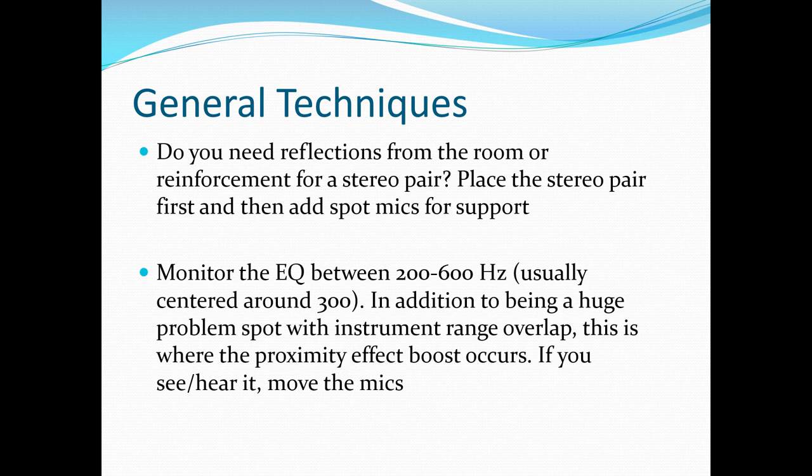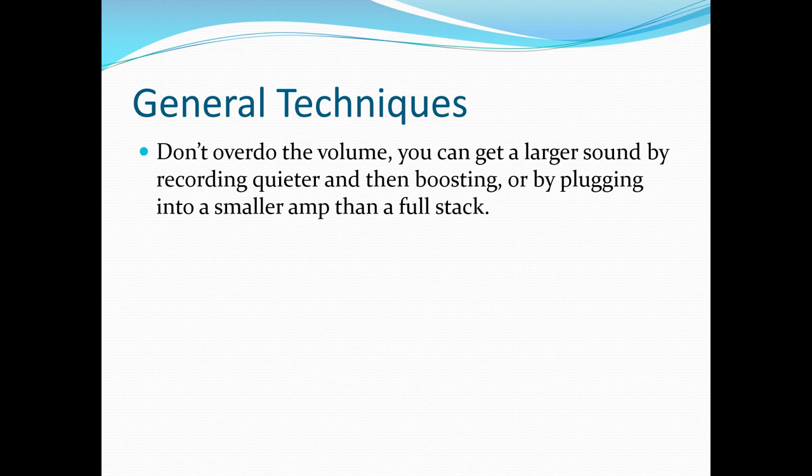Do you need reflections from the room or reinforcement for a stereo pair? Place the stereo pair first, then add spot mics for additional support. While you're setting up and doing test recordings, monitor the EQ usually between 200 and 600 Hz, typically centered around 300. In addition to being a huge problem spot where instrumental ranges overlap, this is where the proximity effect boost is most noticeable. If you see it or hear it on your DAW, move the mics further from the source. Finally, don't overdo the volume — you can get a larger sound by recording quieter and then boosting, or by plugging into a smaller amp.